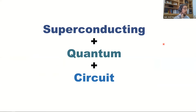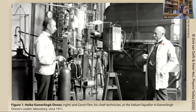The title 'superconducting quantum circuits' involves many concepts — using superconductors to create electrical circuits operating in a quantum regime. The history of superconductivity is about 100 years old, starting at the beginning of the 20th century with the discovery of machines to liquefy helium-4 by Kamerlingh Onnes.